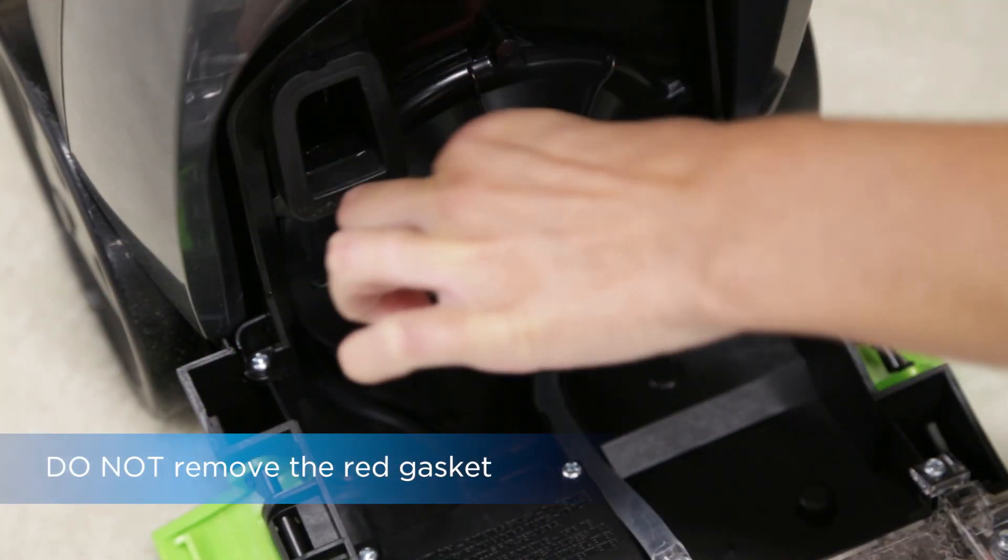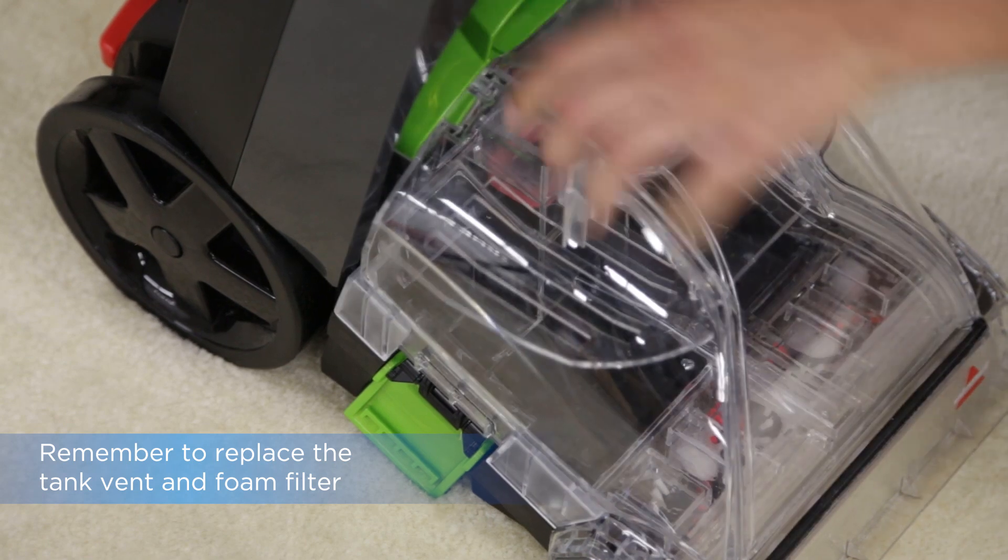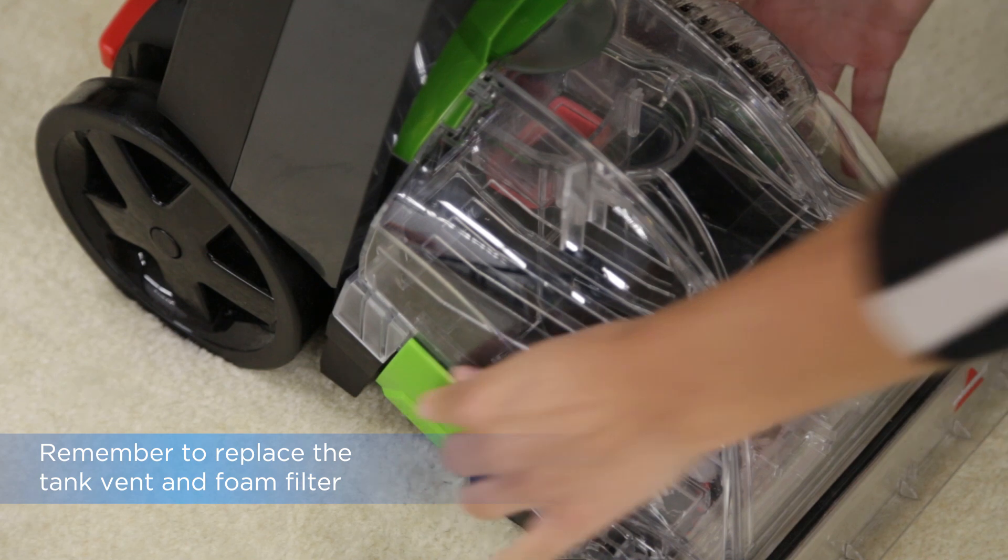Remove any debris from the red gasket on the base of the unit. Once clean and dry, you can reattach the collection tank to the base of the machine. Secure both latches on the sides of the tank.